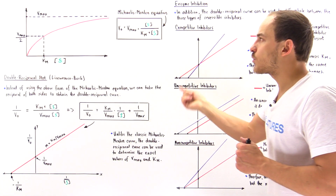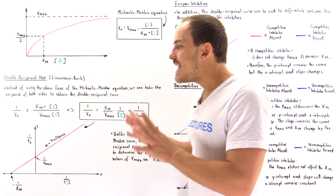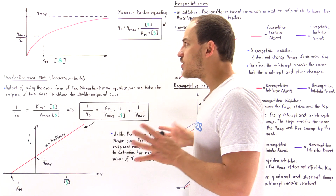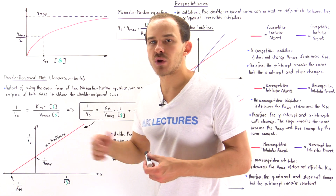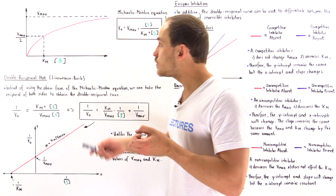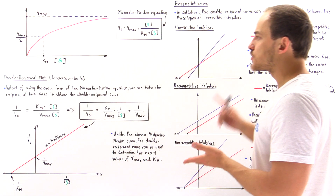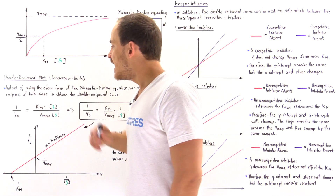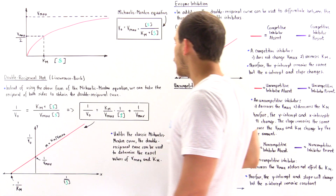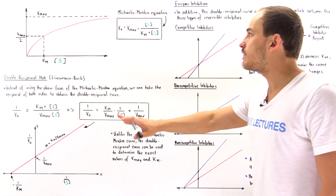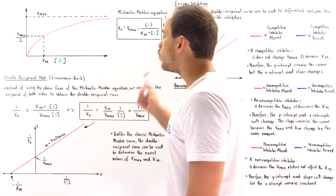Taking the reciprocal of both sides yields a straight line, and now the same pieces of information — the Km value, Vmax, and so forth — are given to us in the form of a straight line. A straight line is much more useful than the asymptotic curve because it can be used to actually calculate Km and Vmax. So instead of using the Michaelis-Menten equation that gives us an asymptotic red curve, we take the reciprocal of both sides to obtain a double reciprocal curve, also known as the Lineweaver-Burk curve.